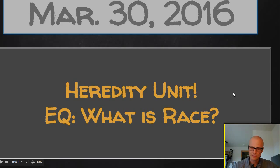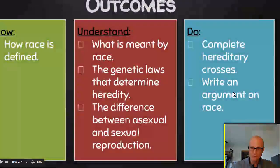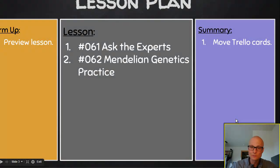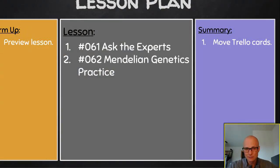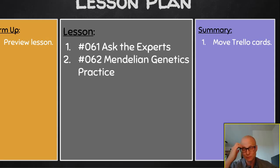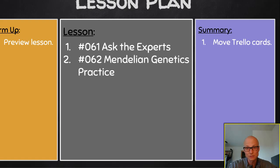Wednesday, March 30th. Rotated schedule, but same questions, same unit, same outcomes. New tasks. You want to work with the class for about 10 minutes to accomplish number 61, Ask the Experts. We're all going to come together and answer 15 questions, split up between the class. Those are things you can use during your final response, which is number 64, coming up tomorrow and Friday.